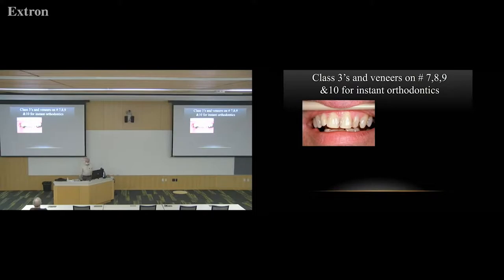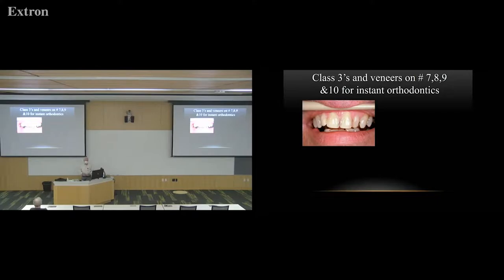I graduated from dental school in 1961. Composite wasn't around at that time — actually, porcelain veneers weren't around either; they came out in the 80s. But when composite came out, I got really excited about the idea of being able to take a tooth-colored material, add it to a tooth, and make it look good. I didn't really know how to use it, so I started taking CE courses — continuing education courses. I took hundreds of hours of courses all over the United States because we didn't learn it in dental school.